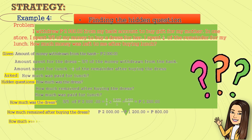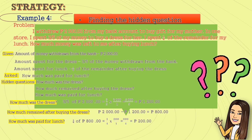Next, how much was paid for lunch? That is one-fourth of the remainder which is eight hundred pesos. Or multiply one-fourth and eight hundred. That is eight hundred over four. The answer is two hundred pesos.